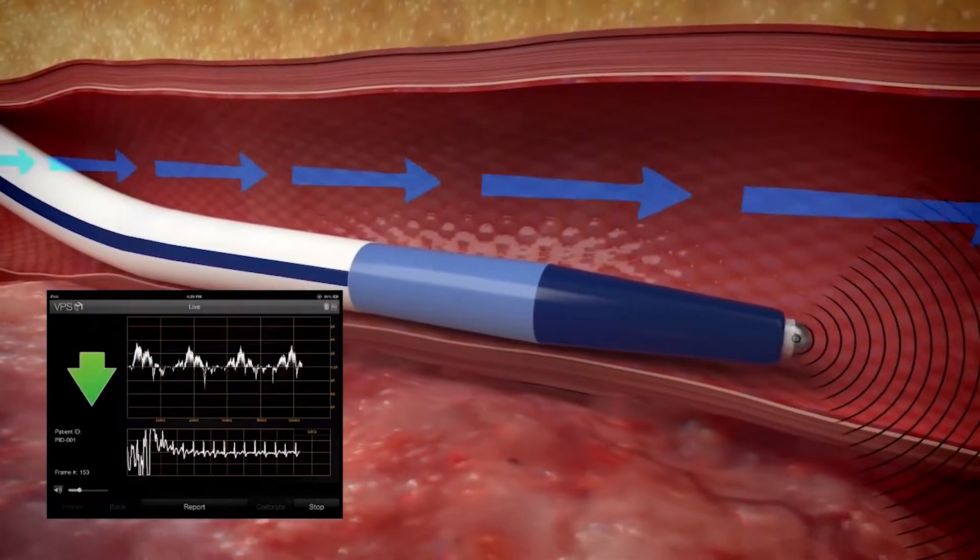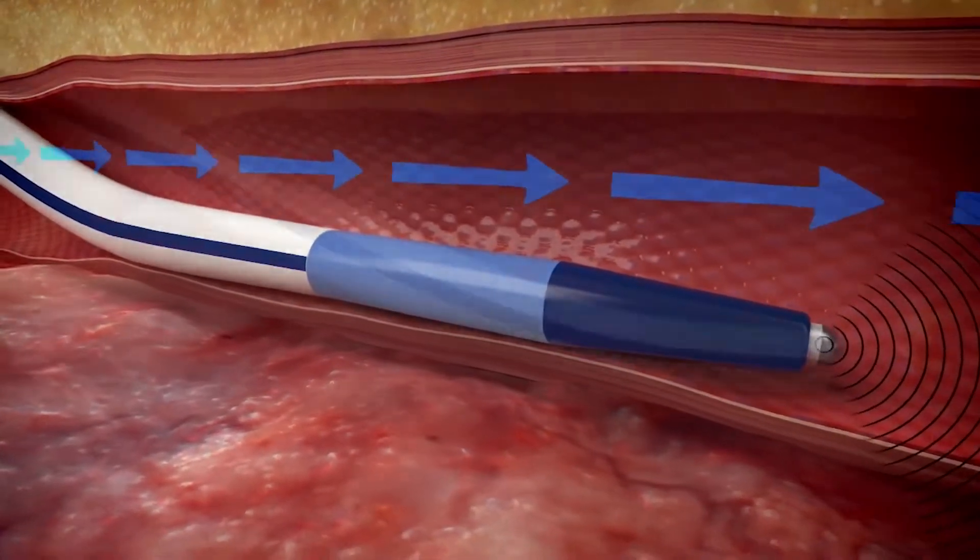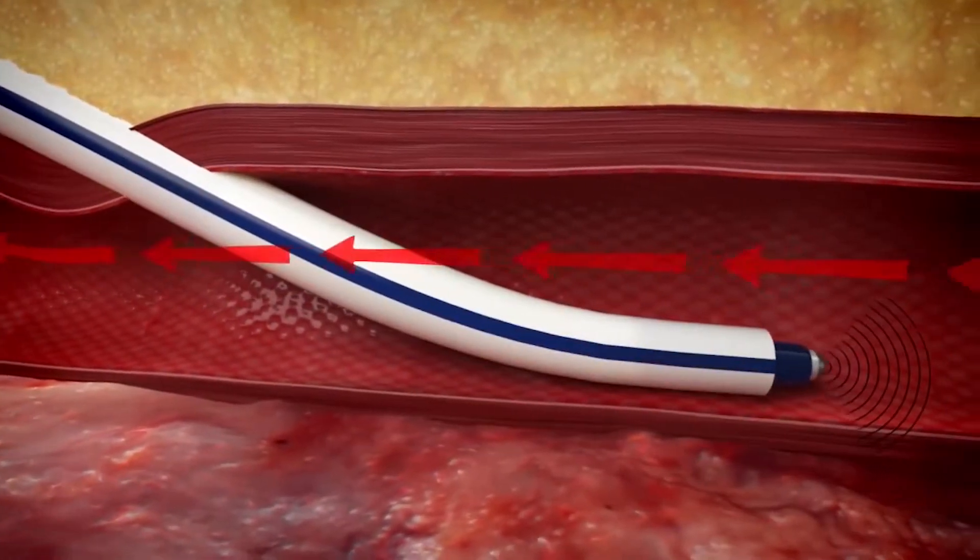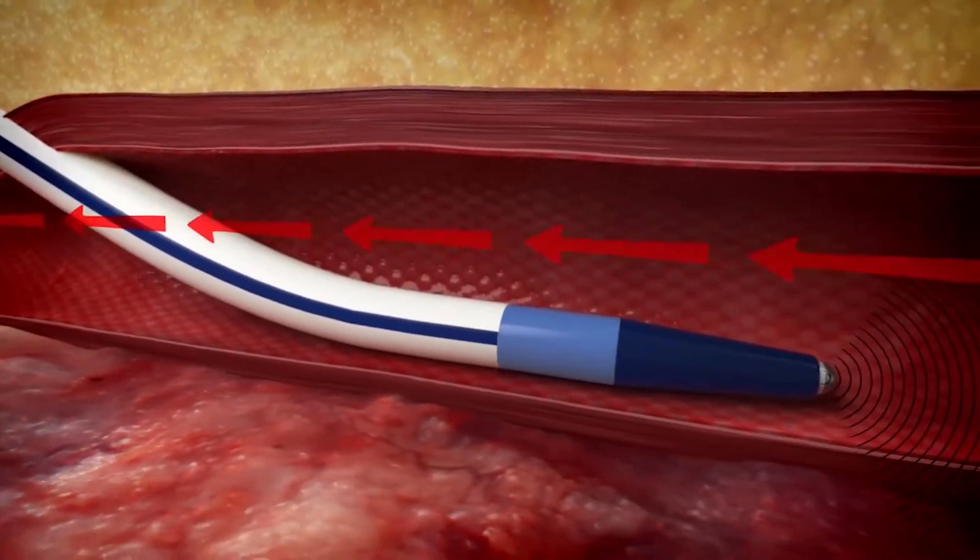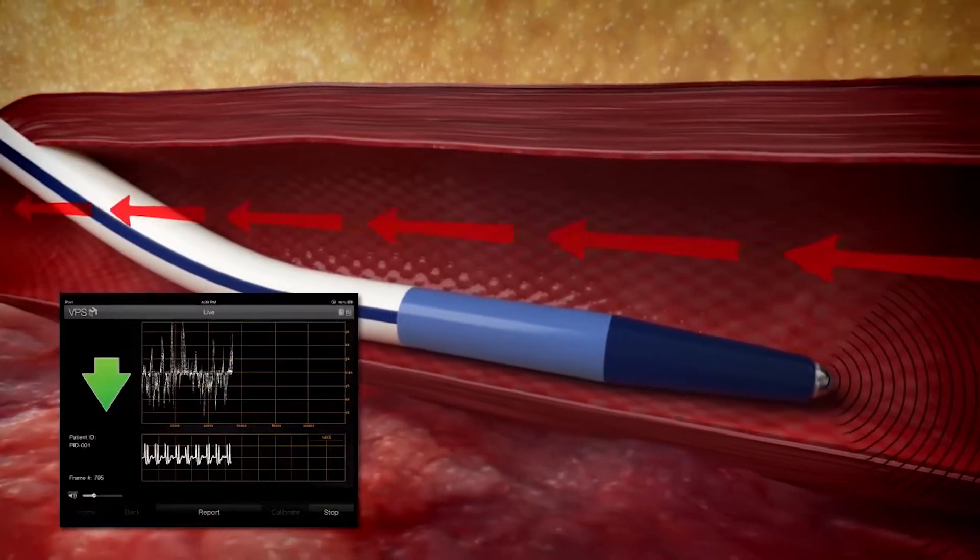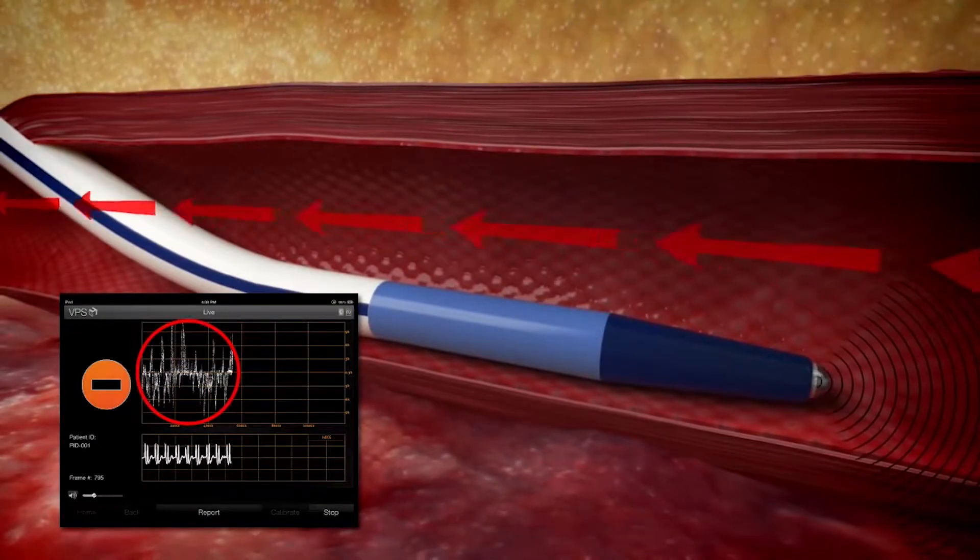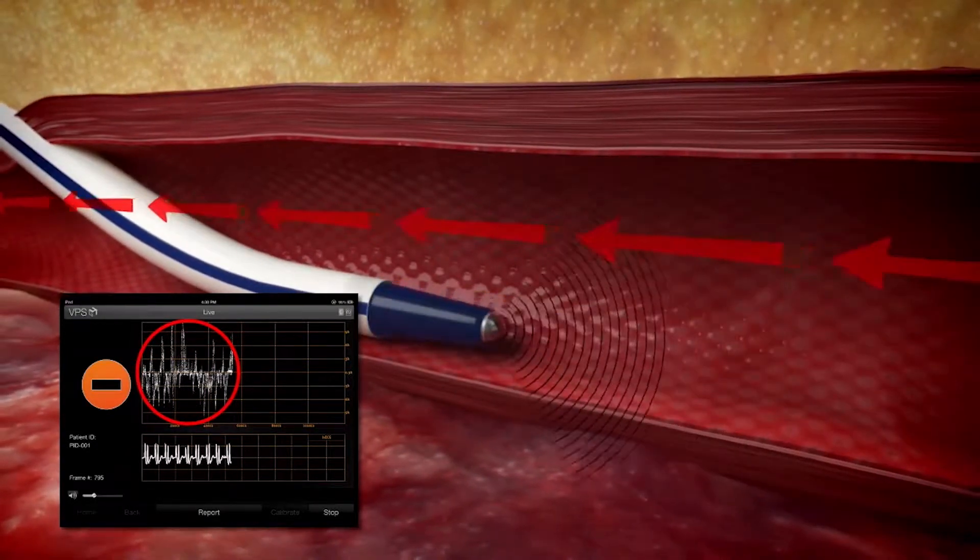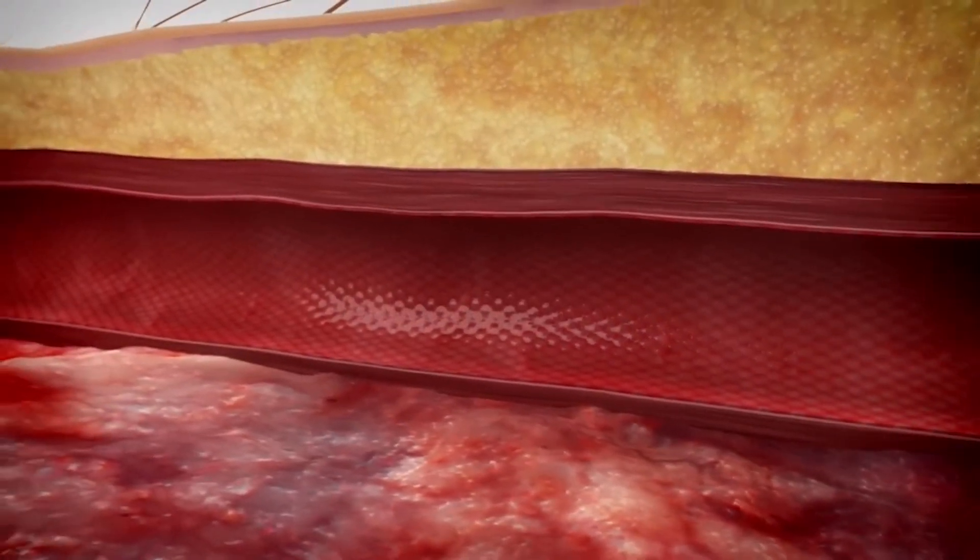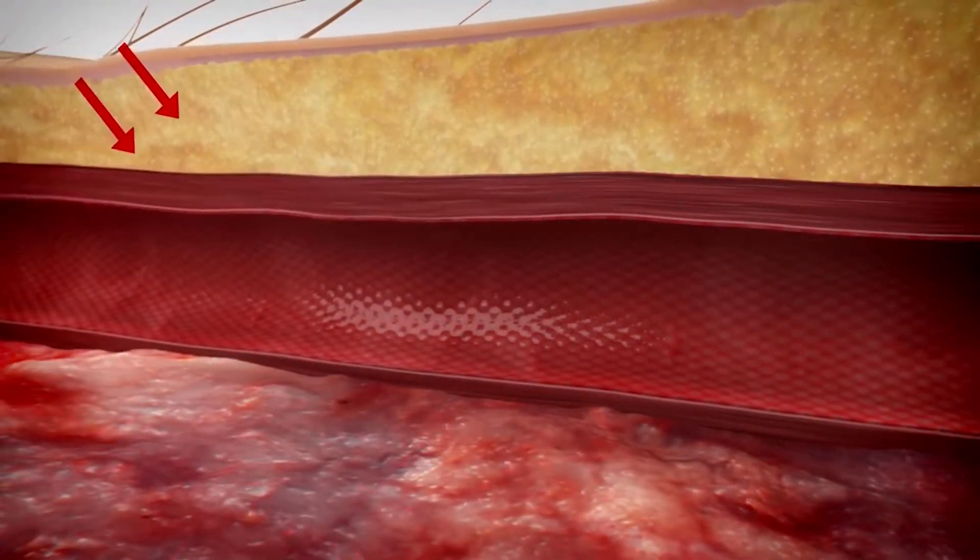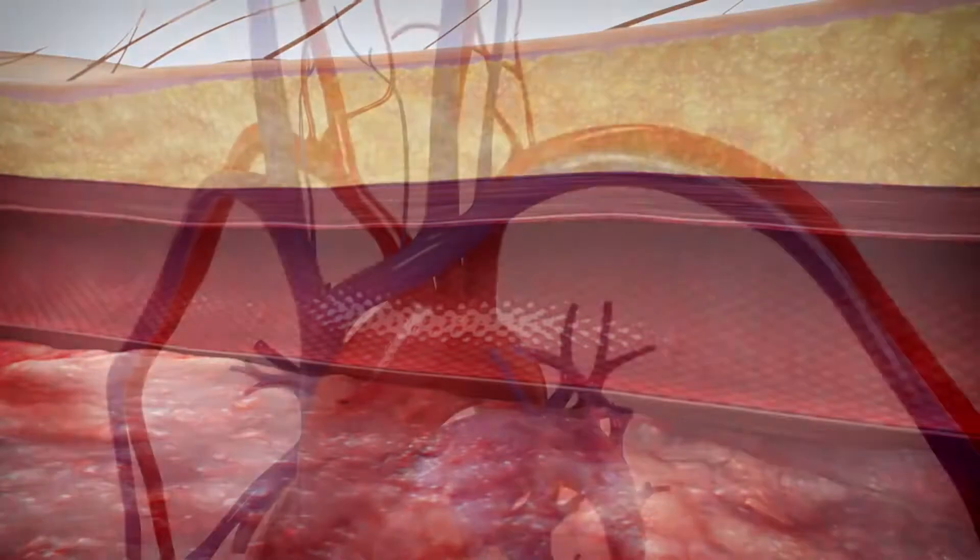With the Arrow VPS G4 device, inadvertent entry into an artery causes a corresponding Doppler signature which will alert the clinician to discontinue advancing the catheter. The clinician can then remove and hold pressure on the site.